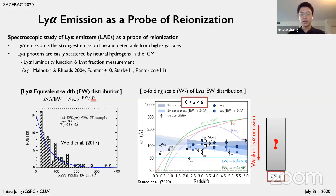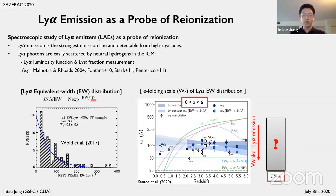The redshift dependency of the equivalent width distribution's e-folding scale, as shown in the right plot from Santos et al. 2020, displays the compilation of distribution measurements at redshifts from 0 to 6. At redshifts below 6, where reionization has been completed, the e-folding scale does not change very much over time. However, during the epoch of reionization, an increasing amount of neutral hydrogen in the intergalactic medium would have an impact on Lyman-alpha visibility. So here we aim to constrain the equivalent width distribution during reionization in order to trace the evolution of IGM neutral fraction.